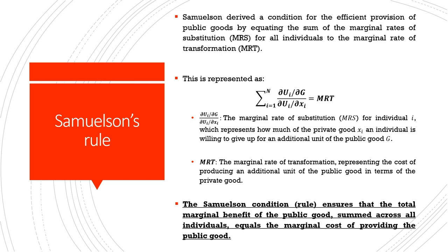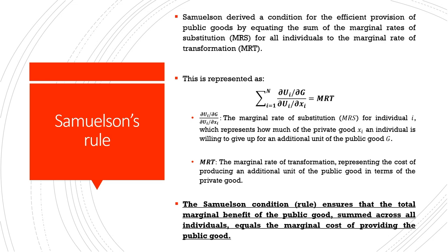The marginal rate of substitution (MRS) of individual i tells us how much of one good they are willing to forego for an additional unit of another good. In this context, MRS represents how much of the private good xi an individual is willing to give up for an additional unit of public good G — shown as the partial derivative of utility with respect to G over utility with respect to private good. The summation of ∂ui/∂G over ∂ui/∂xi equals the marginal rate of transformation — the cost of producing an additional unit of public good in terms of private good foregone.